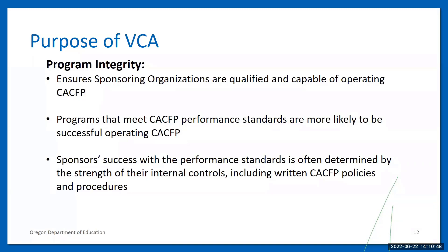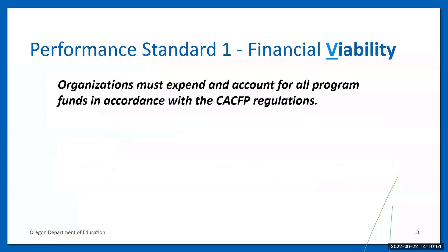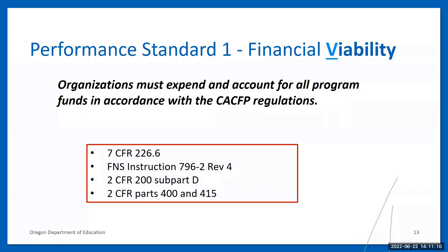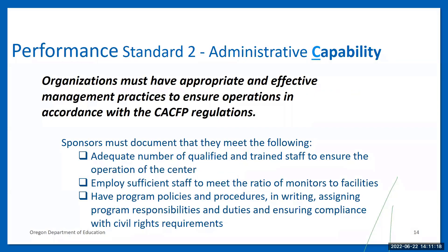Now let's take a closer look at the three performance standards. The first performance standard is financial viability. Sponsors must demonstrate that they are a financially viable organization to participate in CACFP. Organizations must expend and account for all program funds in accordance with regulations. The second performance standard is administrative capability. To demonstrate administrative capability, the management practices of a sponsor must be appropriate and effective to ensure that operations are in accordance with CACFP regulations.